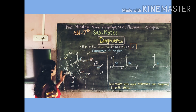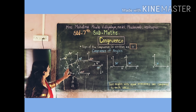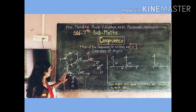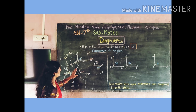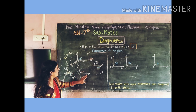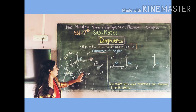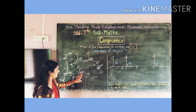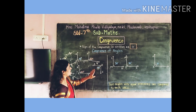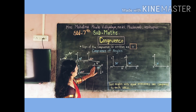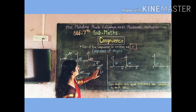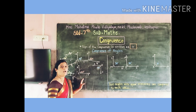Now next, measurement of angle SPM is equal to 35 degrees. Measurement of angle RTS is equal to 100 degrees. And last, measurement of angle SRI is equal to 90 degrees.